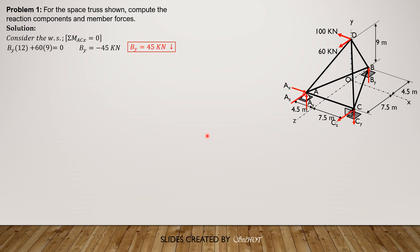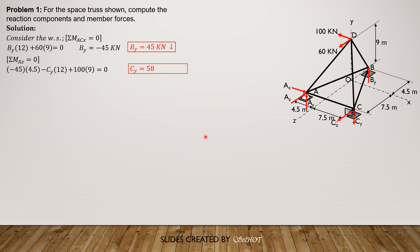Having found BY, we sum up moment about EZ equals 0 to solve for CY. By the right-hand thumb rule, BY is negative 45: BY times 4.5, plus 100 times 9, minus CY times 12, then plus 100 times 9, equals 0. Solving, CY is 58.125 kN, and since it is positive our assumed direction is correct — CY is downward.